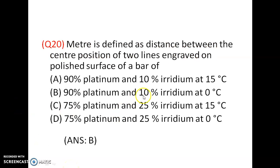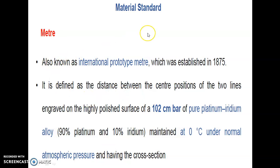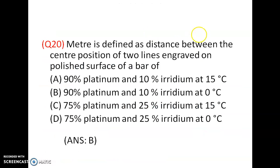Meter is defined as the distance between the center position of two lines engraved on the polished surface of a bar of 90% platinum and 10% iridium at 0 degree Celsius. It is also known as the international prototype, maintained at 0 degree Celsius under normal operating pressure. Answer is B.